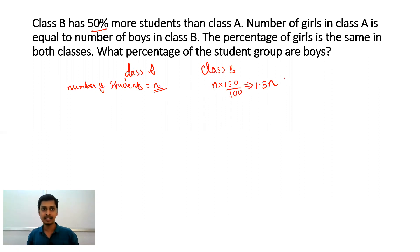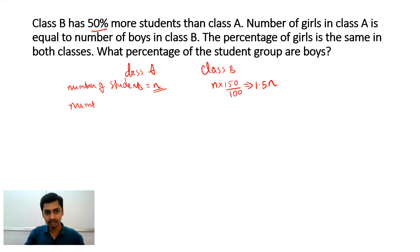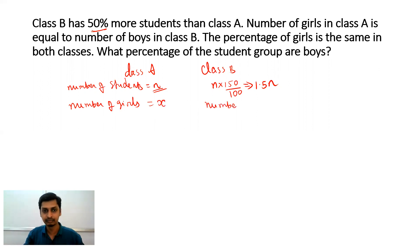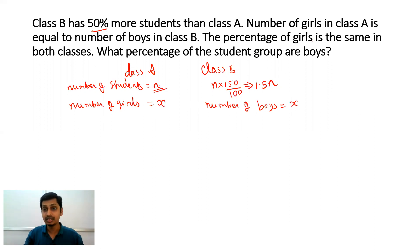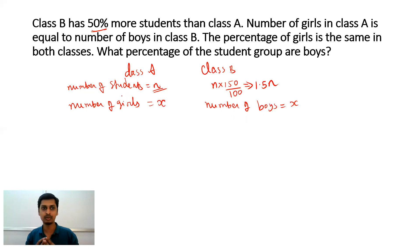Next, the number of girls in class A is equal to the number of boys in class B. So we let the number of girls in class A be x. Then the number of boys in class B is also x because both are the same. And the percentage of girls is the same in both classes — so if class A has 25% girls, class B also has 25% girls.